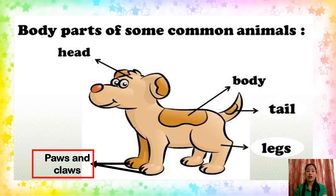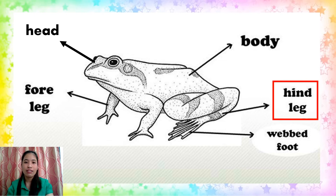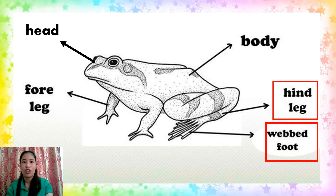The dog's claws are fairly strong — they help the dog to run and maneuver, to dig, and offer some protection. The paws are used to support the dog's weight as well as their joints. How about the body parts of a frog? It has a head, foreleg, body, hind leg, and web feet. The long hind legs of a frog are used for jumping. Its web feet enable it to move in water, and its tongue is used to catch insects.